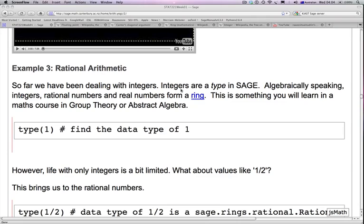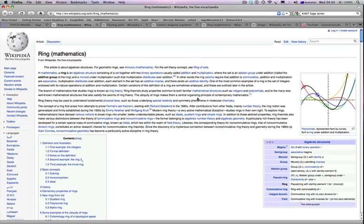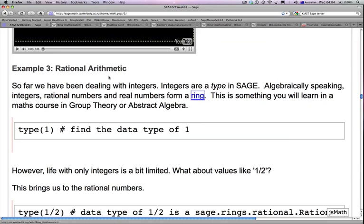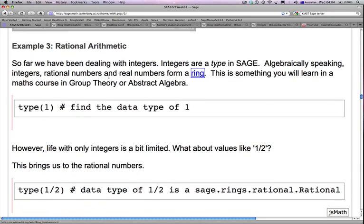So far we've been dealing with integers, and integers are just a type in SAGE. Algebraically speaking, integers, rational numbers, and real numbers form a ring. If you don't know what a ring is and you're curious, you can look at this link. It'll take you to a Wikipedia link on rings. If you don't know what a ring is, don't worry about it for this course. This is something you'll learn in a math course in group theory or abstract algebra.